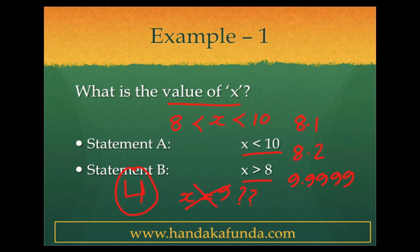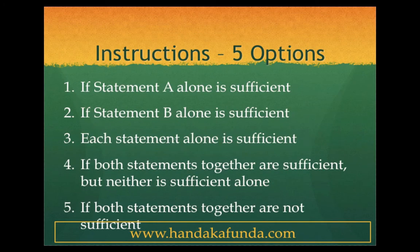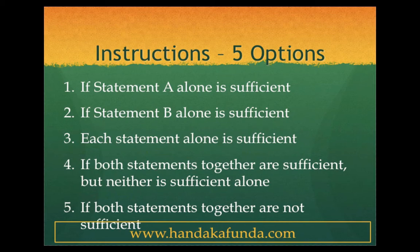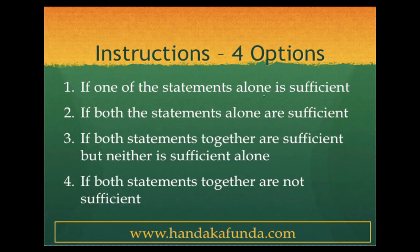Now let us look at the five options. Five options are: mark one if statement A alone is sufficient; mark two if statement B alone is sufficient; mark three if each statement alone is sufficient; mark four if both together are sufficient; and mark five if both together are also not sufficient. Note that it is not necessary that these will always be the set of options — these are just the most common types. Now let us solve a few questions using the four-option rule. To recap: one alone is sufficient — mark one; both alone are sufficient — mark two; both together are sufficient — mark three; both together are not sufficient — mark four.